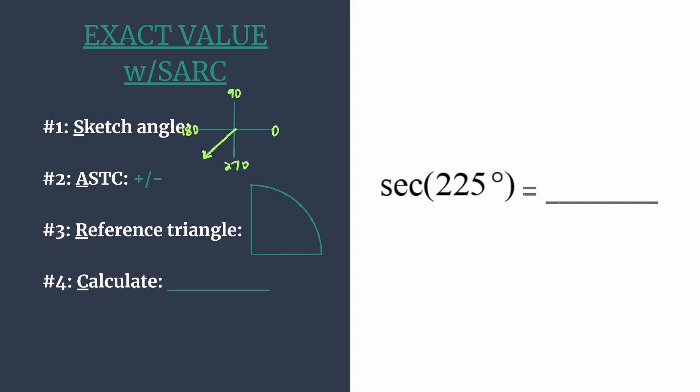Now we're ready to use ASTC to decide if our final answer is positive or negative. Think all students take classes, working from quadrant 1 around counterclockwise, and it tells you which trig functions are positive in these quadrants. So all are positive in the first.